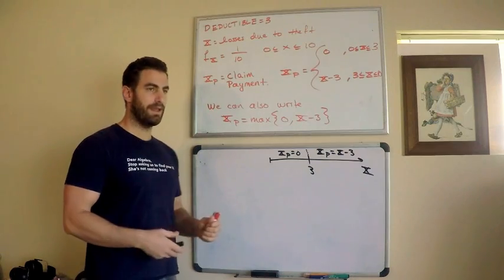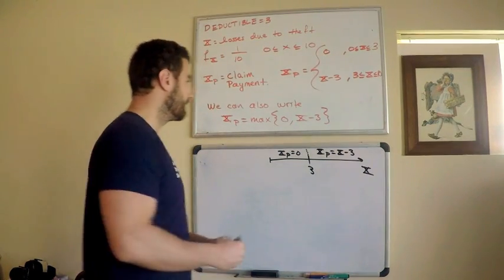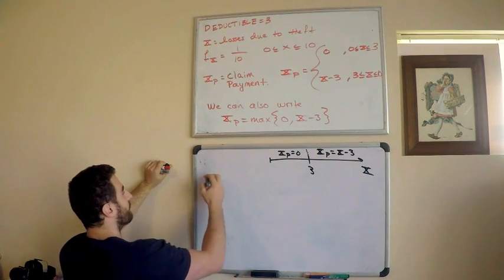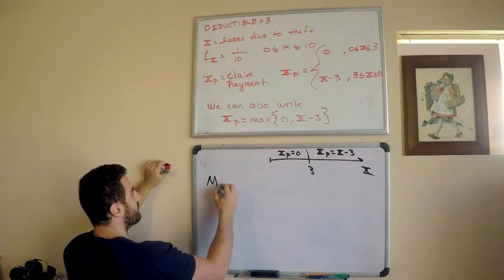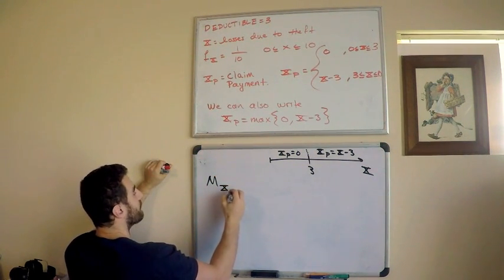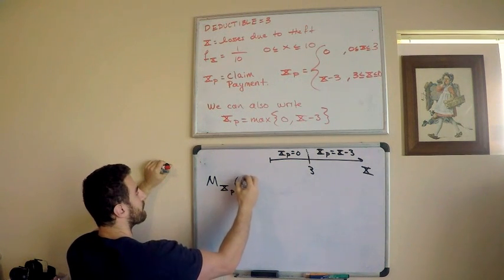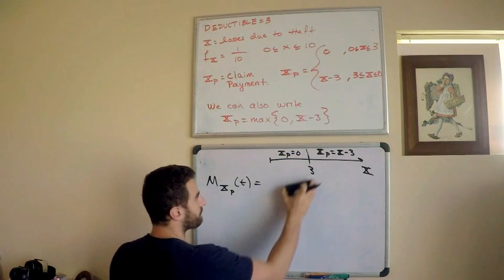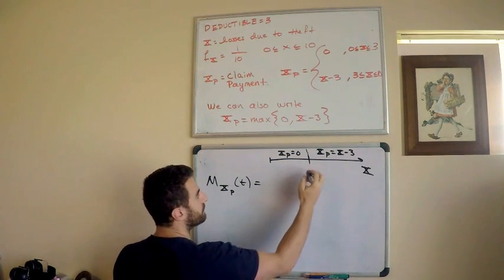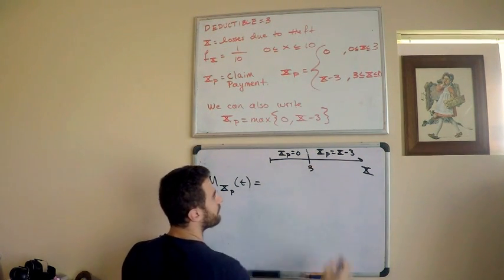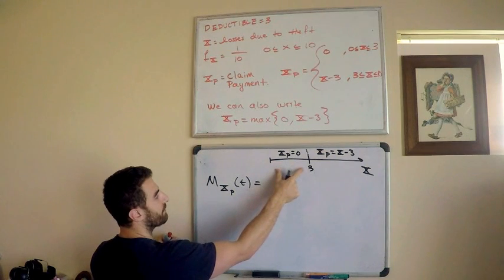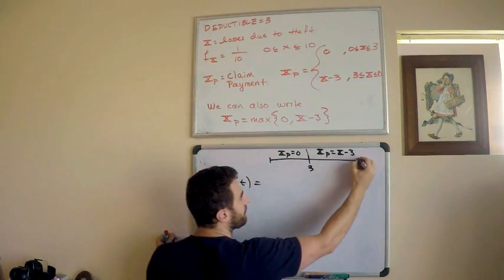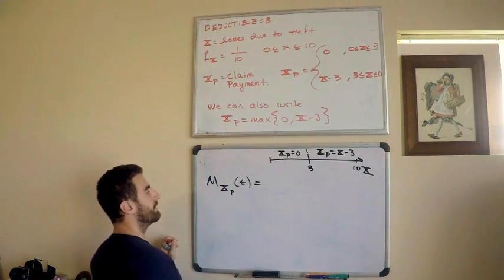I'm going to use the value of zero when I'm between zero and three. I'm going to use the value of x minus three after three. I mean, this says the same thing as this, but I don't know. I like little pictures, diagrams, anything that helps. So, I want the MGF, the moment generating function. I'm looking for the moment generating function of xp.